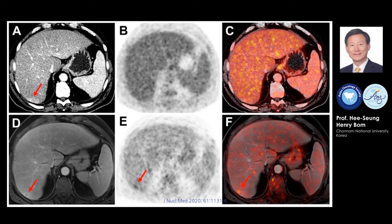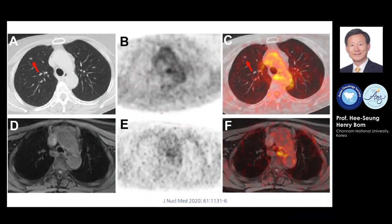Follow-up CT confirmed the diagnosis after 78 days. This slide shows a missed finding by PET-MRI — a 77-year-old female patient with ovarian carcinoma. A small lung metastasis in the right upper lobe that is missed by MRI as well as PET-MRI and PET-CT due to its small size is clearly visible on CT. Follow-up CT confirmed malignancy after 78 days.